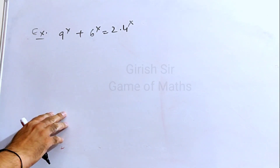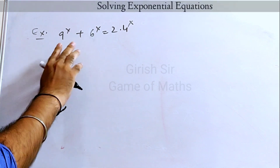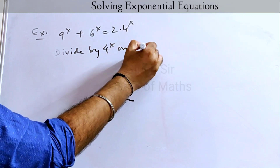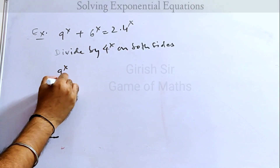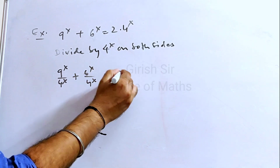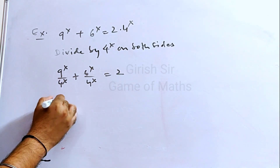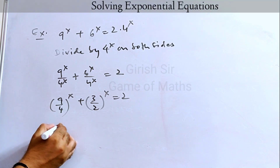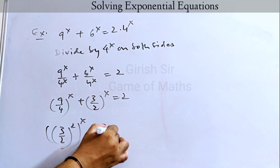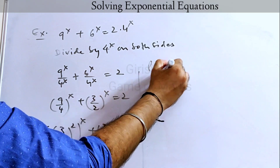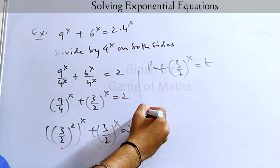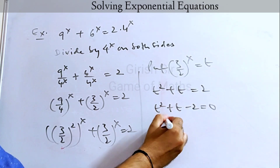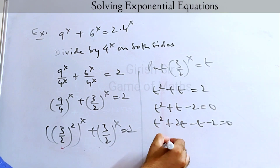Let's see another example. In this case, if we divide by 4 raised to x on both sides, this is what we get, which can be written as: the first term could be written as 3 by 2 squared. Now I put 3 by 2 raised to x as t. This gives a quadratic equation in t.